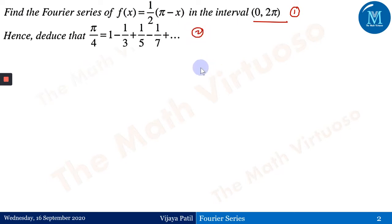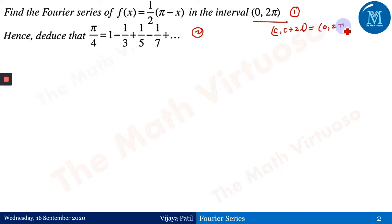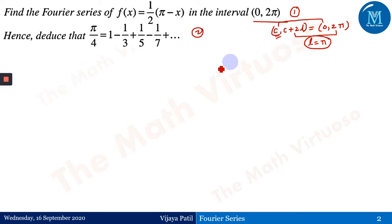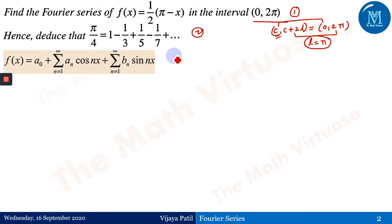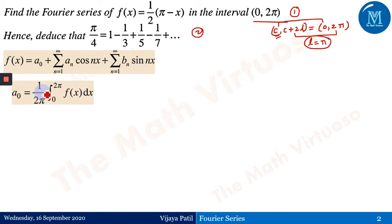Again, this is the interval 0 to 2π, the same type of question we did in the previous session. We compare this interval with the general form c to c + 2l. So c is compared with 0 and c + 2l is compared with 2π, giving us l = π. Therefore the Fourier series formula for the interval 0 to 2π is: f(x) = a₀ + Σ aₙ cos(nx) + Σ bₙ sin(nx), where n goes from 1 to infinity. And a₀ = 1/(2π) times the integral from 0 to 2π of f(x) dx.